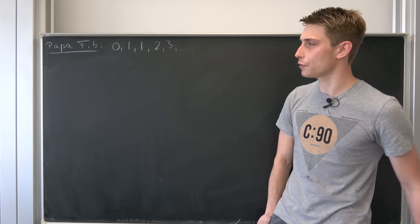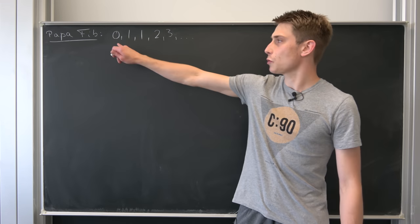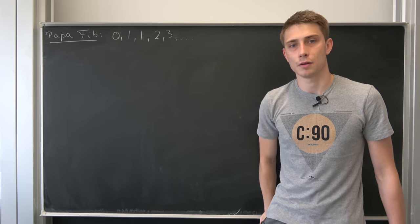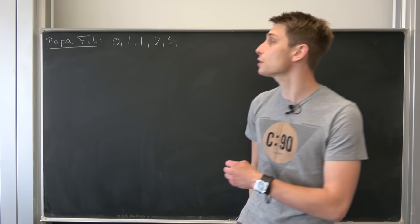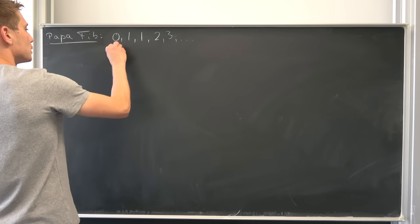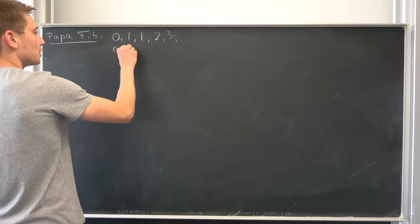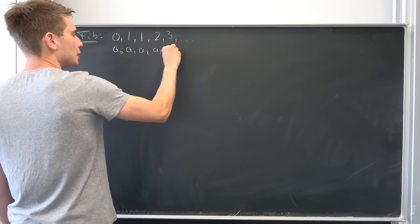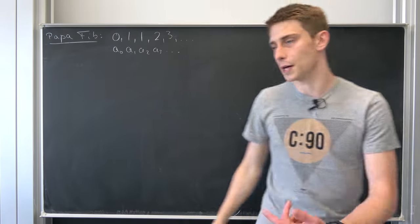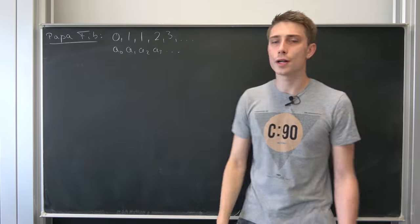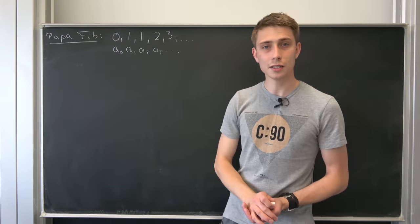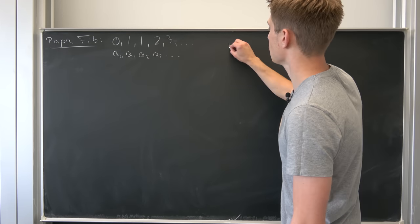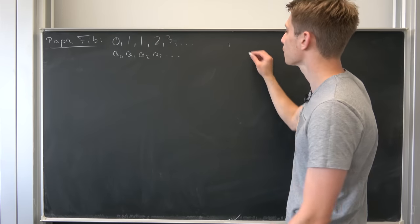Just for clarification purposes: those numbers in here we are going to call them members and they are ordered. So the first one, the zero, is a_naught, and the next one is a_1, a_2, a_3, and so on. You can see the pattern. And how are those Fibonacci numbers constructed? Well, it's an easy pattern — it's a recurrence relation.